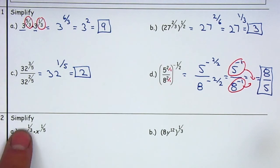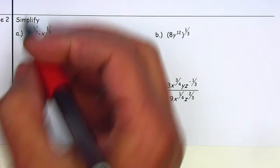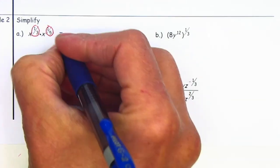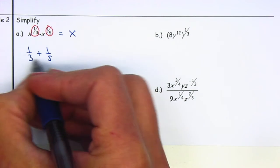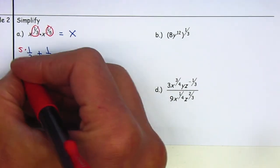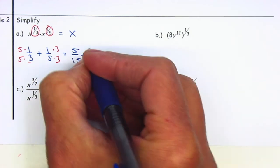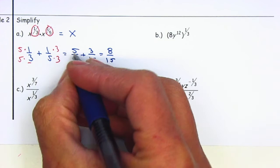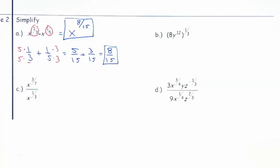Let's continue with example number 2. On example number 2 we start to have variables, and they are multiplying: x to the 1/3 multiplied by x to the 1/5. Because they're multiplying, I'm going to add the exponents; the base will stay the same. I need to add 1/3 plus 1/5 — they need to have the same denominators and they don't. So I'm going to make them the same: the common denominator will be 15. Multiply the left by 5 and the right by 3. That will give me 5/15 plus 3/15, which is equal to 8/15 — 5 plus 3 is 8, denominators kept the same. So that will be the exponent: x to the 8/15.